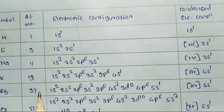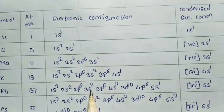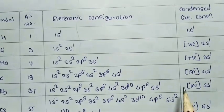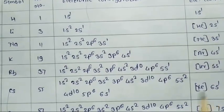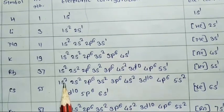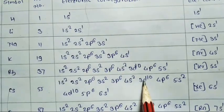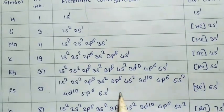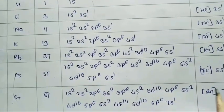Rubidium (Z=37): 1S2 2S2 2P6 3S2 3P6 4S2 3D10 4P6 5S1, condensed [Kr] 5S1. Cesium (Z=55): 1S2 2S2 2P6 3S2 3P6 4S2 3D10 4P6 5S2 4D10 5P6 6S1, condensed [Xe] 6S1.